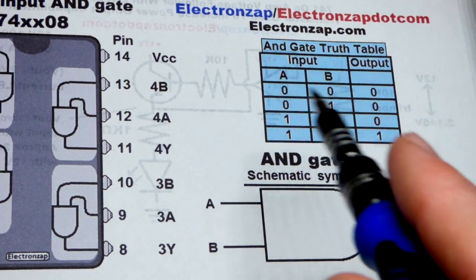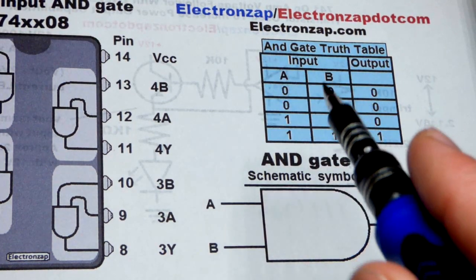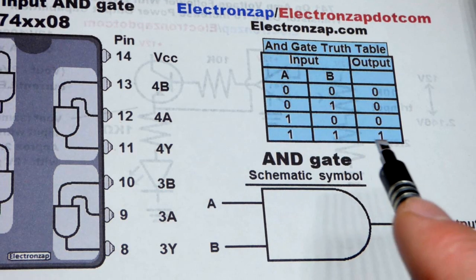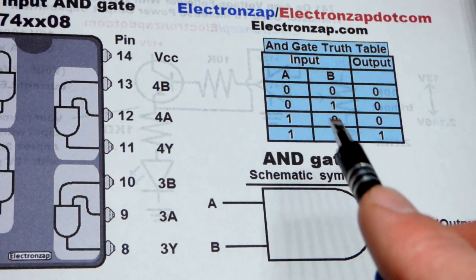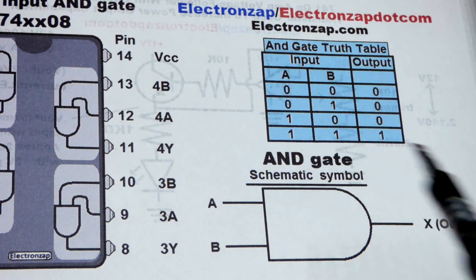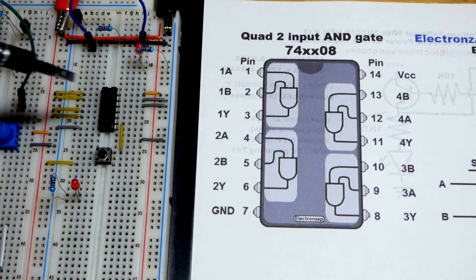But here is the truth table. It has the basic property that every input, sometimes there's more inputs than two, but every input needs to be high for the output to be high. If one or all or any of them are low, then the output is low.